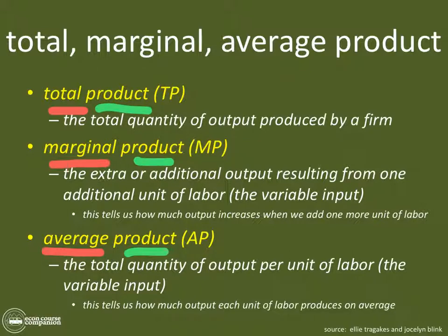Marginal product is the extra or additional output resulting from one additional unit of labor. Marginal product is divided by how many people are actually making it. So if you added one more person to your classroom of ten fourth graders and that person were taller, the new student that walked in would be marginally taller than everybody else. If they were shorter, it would be shorter.